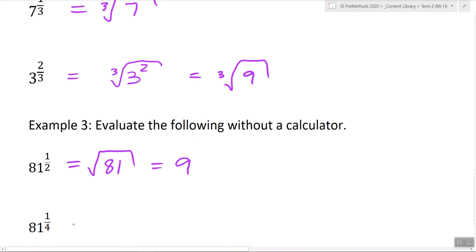Okay, next one. 81 is the same as what surd? Ah, sorry. 1 over 4 is the same as what surd? The 4 surd or the square root. I don't know how to say it. The 4 square root. Something like that.